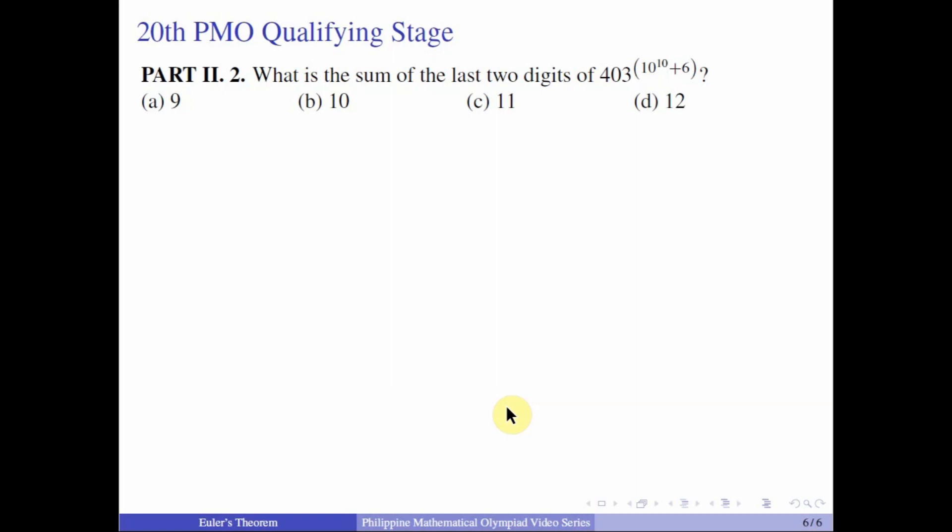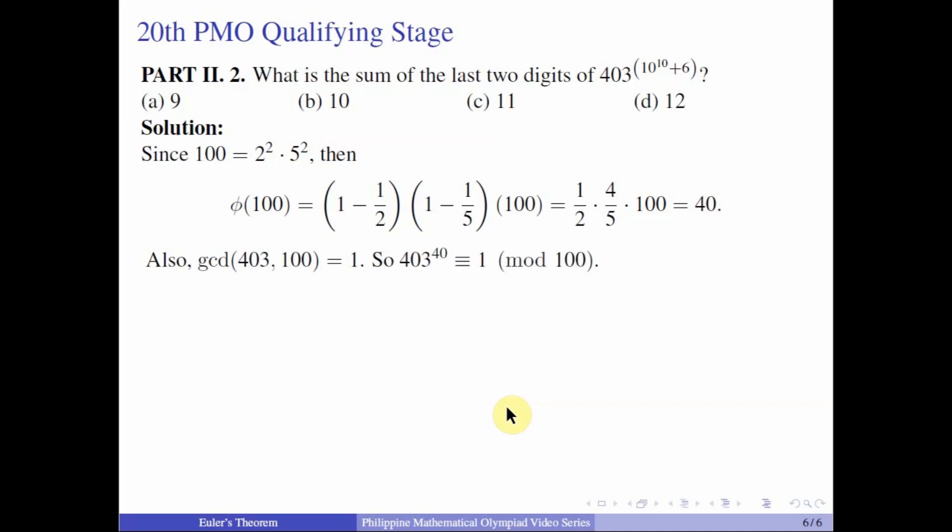So if we want to get the last two digits of a certain number, this is just the same as getting the remainder when this number is divided by 100. And so let us get the prime factorization of 100. So we have 2 squared times 5 squared. And so phi of 100 is 1 minus 1 half times 1 minus 1 fifth times 100 which is equal to 40. And we also know that 403 and 100 are relatively prime. So by Euler's theorem, we know that 403 raised to 40 is congruent to 1 mod 100.